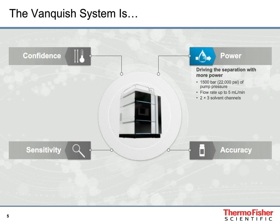Starting with the pump, it can deliver a maximum pressure of 1500 bar — that is 22,000 psi — combined with a maximum flow rate of 5 mL per minute. It is a binary gradient pump with ternary solvent selectors, allowing you to combine up to six different solvents into nine solvent combinations, which is tremendous flexibility.